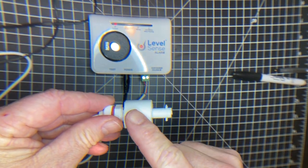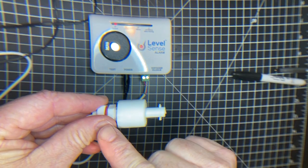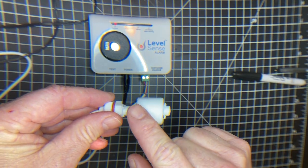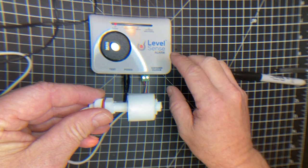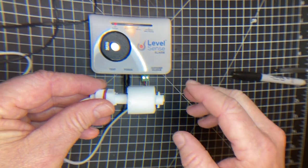Now the float switch, when it's up, is off. And when the bobber drops, the alarm goes off.